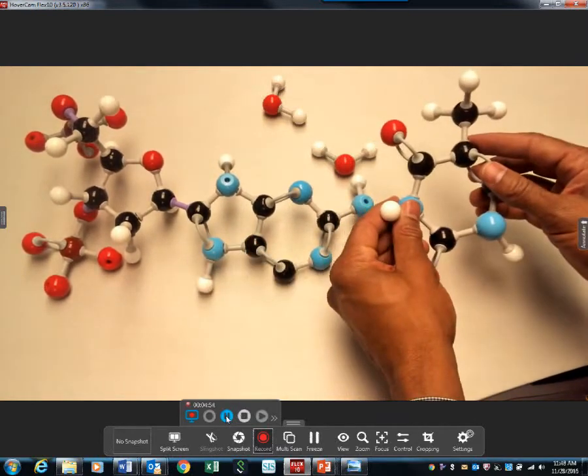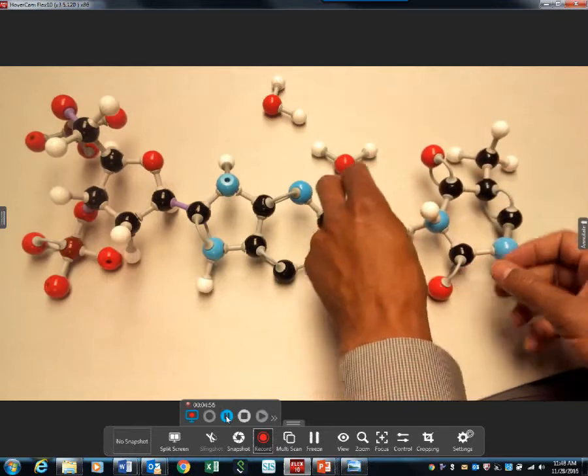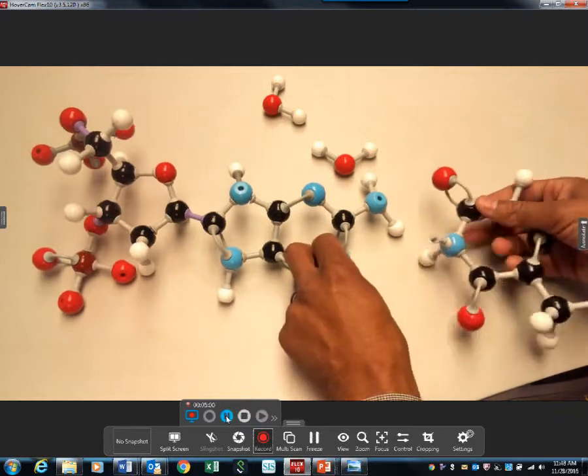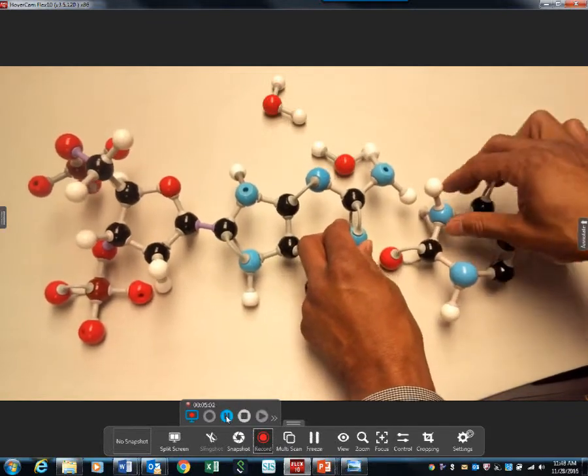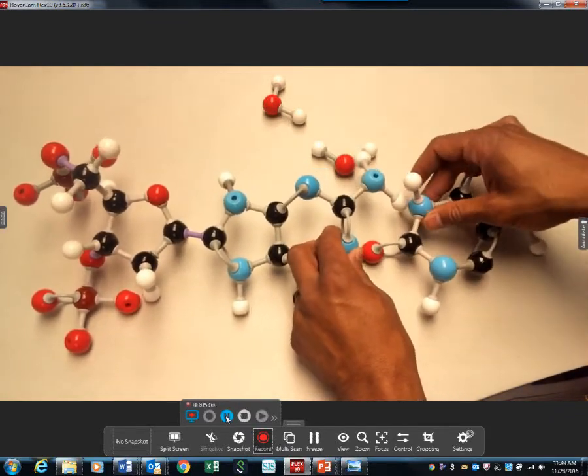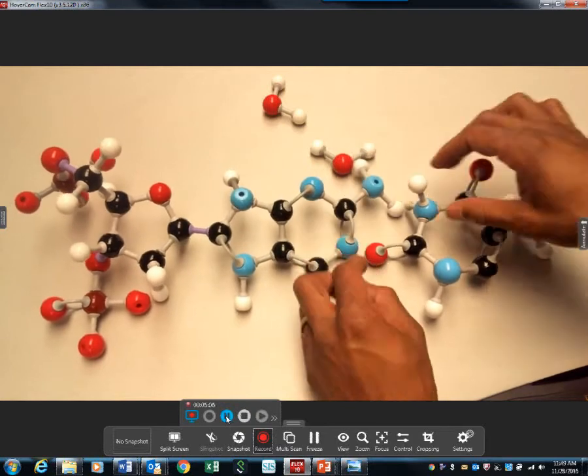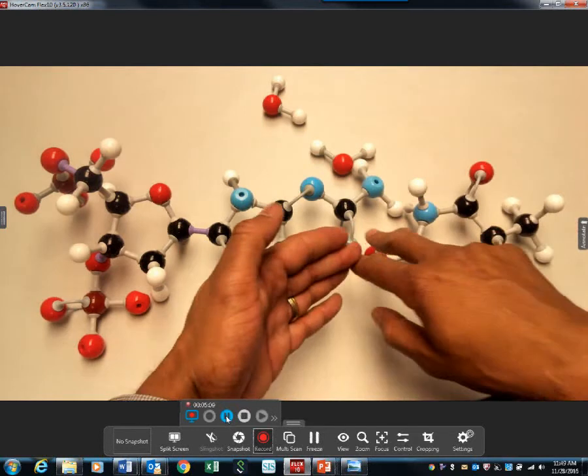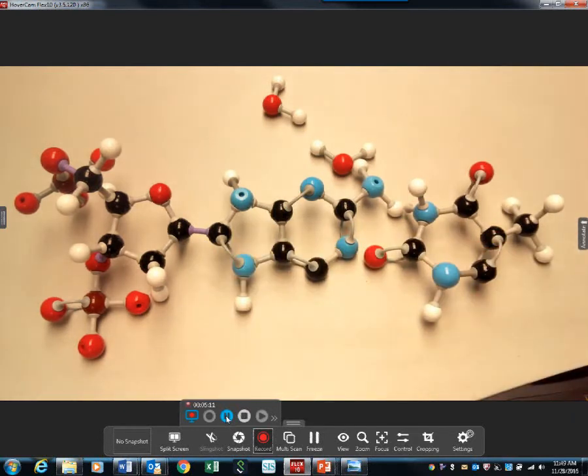So let's do one other thing before I finish. Let's show this is the one side. This would be thymine, and it's going to attach. This hydrogen is going to interact with that, and this is going to hydrogen bond here. So there's your hydrogen bonding. I'll do a video that shows that later - that's a little more complex than what we need.